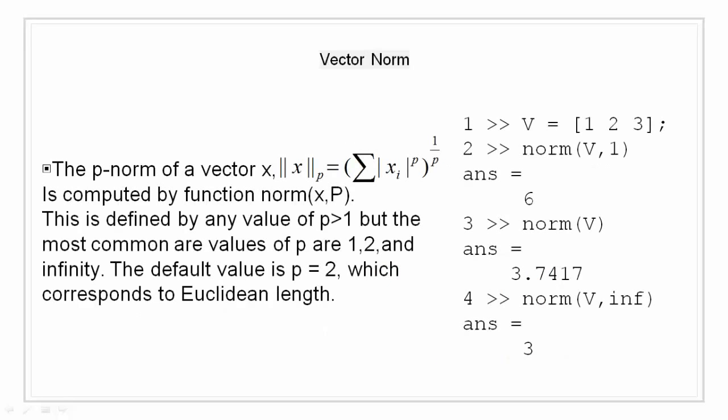The vector norm. The p-norm of vector x is defined by the formula: norm(x, p) equals the sum of |xi| to the power p, whole to the power 1/p. This is computed by the function norm(x, p). The most common values for p are 1, 2, and infinity, though p can have other values as well. The default value of p for the function norm is 2, which corresponds to the Euclidean length.